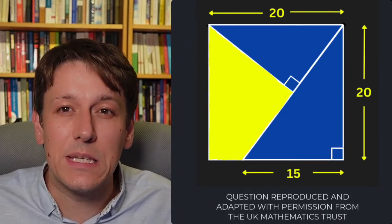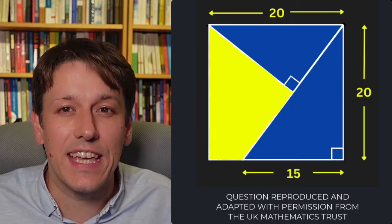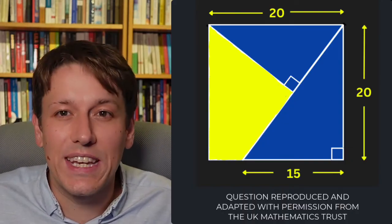The question is about this square which is split into these parts and you've got to work out the area of the yellow part. Have a go at the question, see if you can work it out and then watch my solution.